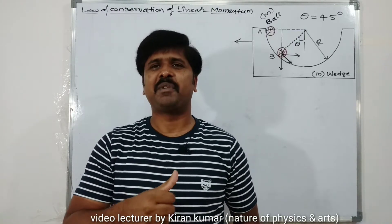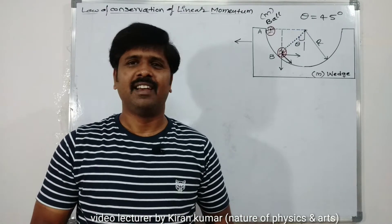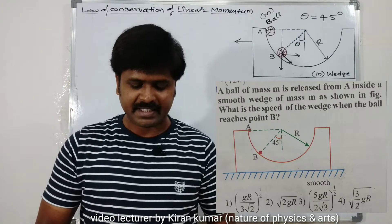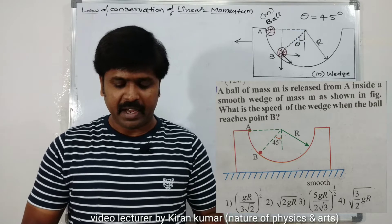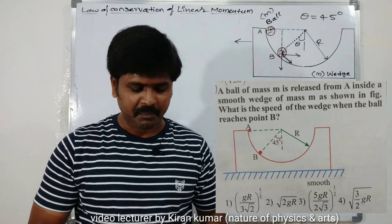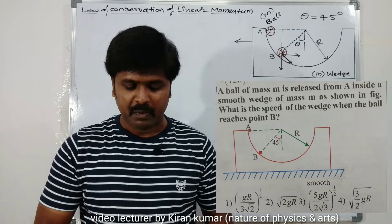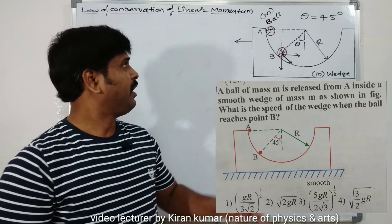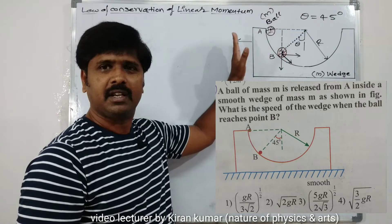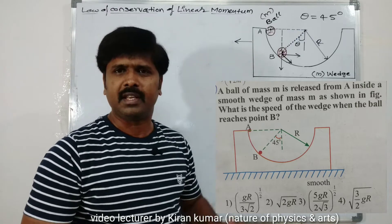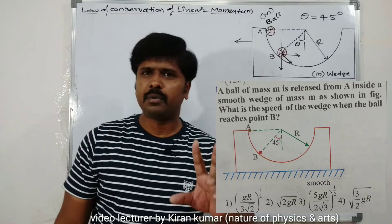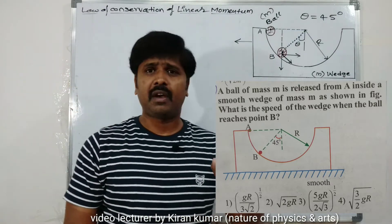Hi, I am Kiran Kumar from Nature of Physics. This is a continuation problem from Work, Energy and Power. A ball of mass m is released from point A inside a smooth wedge of mass m, as shown in the figure. We need to find the speed of the wedge when the ball reaches point B. When the ball moves from position A to B, the wedge moves left with velocity u, and that velocity is what we need to find.